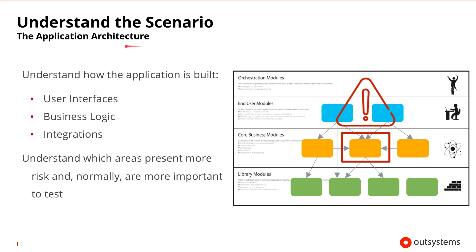It's important to understand the architecture of the application and how the application is built — from the user interfaces to the business logic to the integrations. It's important to understand which areas present the most risk and are therefore the most important to test. For example, if the application is highly dependent on a particular module, then that module should have a higher priority in terms of testing, because that's where most of the risk will probably be.